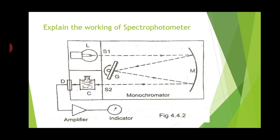Once the first reading is obtained, you should change the cuvette with the reference solution and again take the readings for that reference solution. By comparing both readings we can find out the absorption ratio.